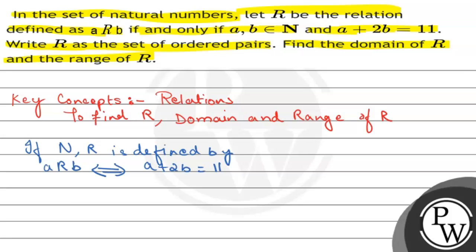According to this condition, if we consider, let a as 1. If a is 1, then 1 plus 2b equals 11, then 2b equals 10, so we get the value of b equals 5. So (1,5), this condition matches with this condition.